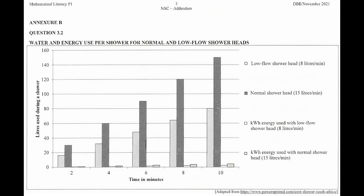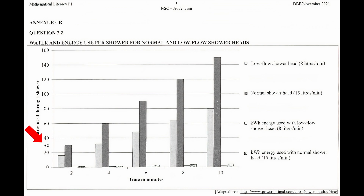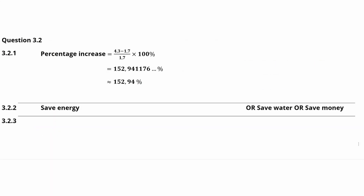From the graph in Annexure B, the approximate amount of water used for a normal shower head is represented by the relevant bars. For an eight-minute shower, the approximate amount of water used is 120 litres, and for a two-minute shower the approximate amount is 30 litres. The range is equal to 120 litres minus 30 litres.